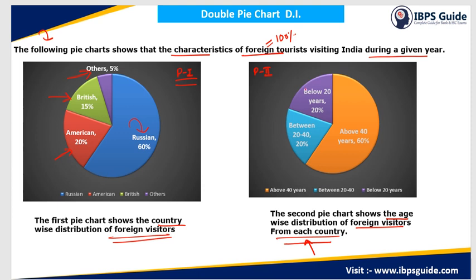In Russia, the total persons who are below 20 years of age is about 20%, those in the 20 to 40 age group is 20%, and above 40 years is about 60%. The same data applies for America as well — below 20 years is 20%, 20 to 40 is 20%, and above 40 is 60%. Same is the case with British and other countries too.